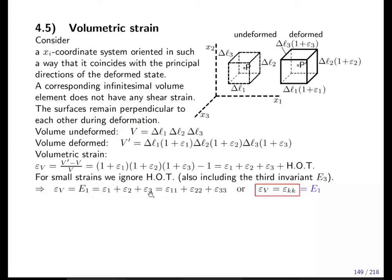To first order, the volumetric strain equals the first invariant of strain, equal to the sum of the diagonal elements. Here the eigenvalues are equal to the diagonal elements in an arbitrary orientation. Epsilon one, epsilon two, epsilon three are eigenvalues; epsilon eleven, epsilon twenty-two, epsilon thirty-three are the normal strains in an arbitrary orientation — the same definition as for stress. In index notation, epsilon v is also often abbreviated as epsilon kk, where summation over kk is implied.